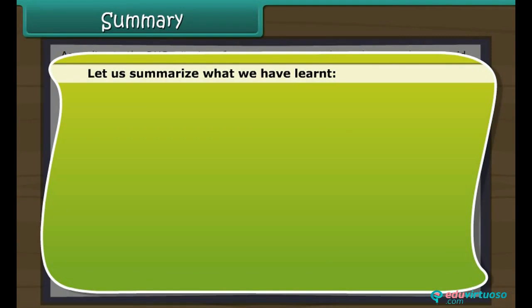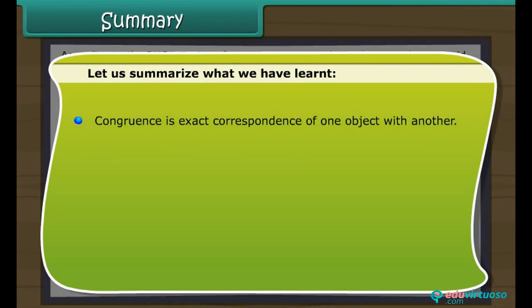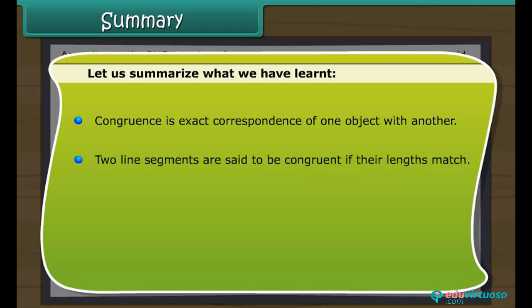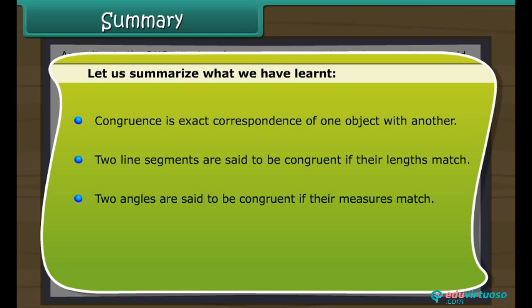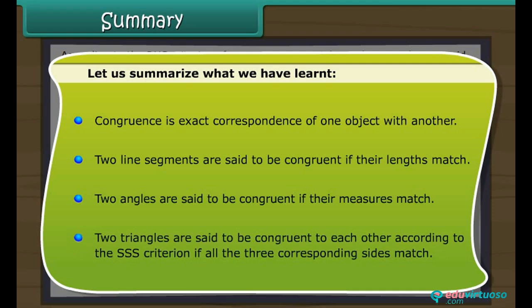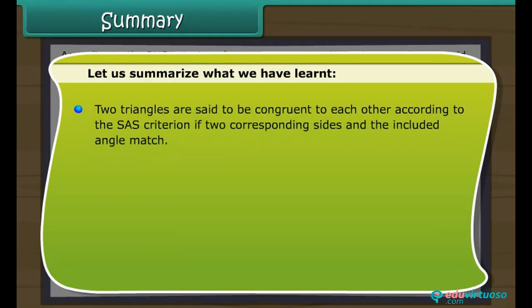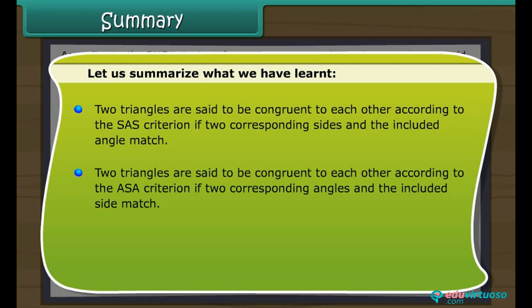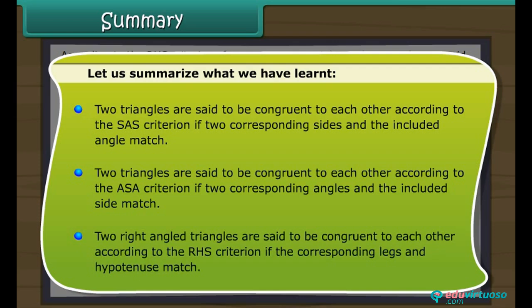Let us summarize what we have learned. Congruence is the exact correspondence of one object with another. Two line segments are said to be congruent if their lengths match. Two angles are said to be congruent if their measures match. Two triangles are said to be congruent according to the SSS criterion if all three corresponding sides match; according to the SAS criterion if two corresponding sides and the included angle match; according to the ASA criterion if two corresponding angles and the included side match; and according to the RHS criterion if the lengths of the corresponding legs and hypotenuse match.